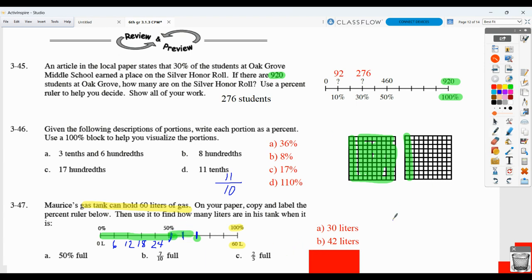And then two fifths full. Well, two fifths can be converted very easily into tenths. So if we use our giant one, five times two is 10, two times two is four. And the idea is that if I multiply top and bottom by a giant one of two over two, that's how I'm getting four tenths. Well, that means four tenths on here would be one, two, three, four, right there. One section, two sections, three sections, four sections. Again, each section is six. So six, 12, 18, 24. So 24 liters.